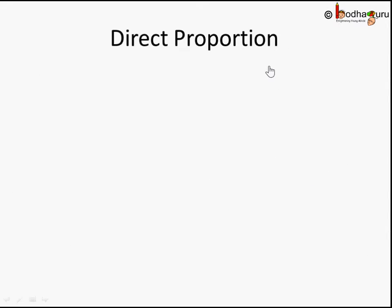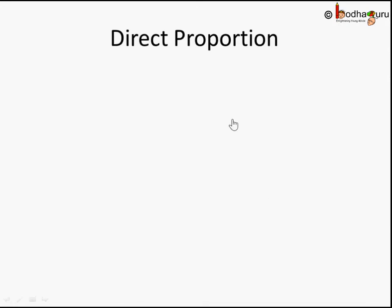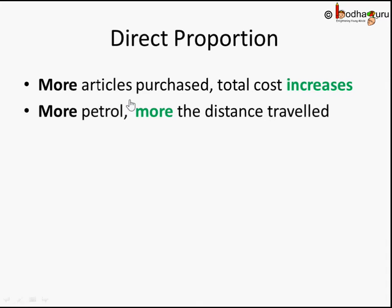One is called direct proportion, which we are going to learn in this lesson. The other is called indirect or inverse proportion, which we will learn in the next lesson. For direct proportion: say you purchased 10 bags of rice and paid 1000 rupees. If you purchase 20 bags of rice, you will pay more. So more articles purchased means total cost increases — this becomes more, that also becomes more, or this becomes less, that also reduces.